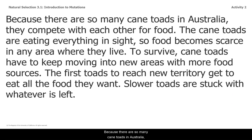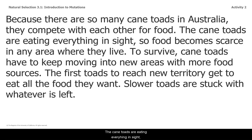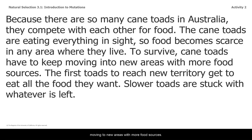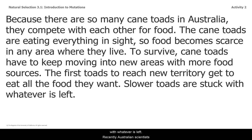Because there are so many cane toads in Australia, they compete with each other for food. The cane toads are eating everything in sight, so food becomes scarce in any area where they live. To survive, cane toads have to keep moving into new areas with more food sources. The first toads to reach new territory get to eat all the food they want, while slower toads are stuck with whatever is left.